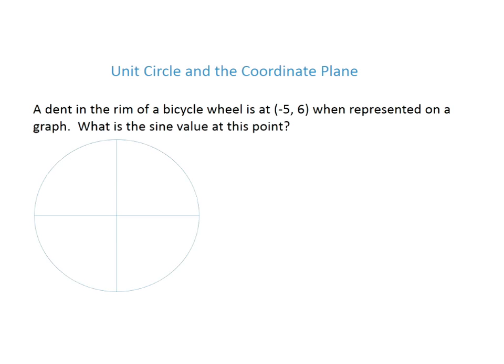In this lesson, we're going to use the unit circle to problem solve on the coordinate plane. So let's take a look at this problem. A dent in the rim of a bicycle wheel is at negative 5, 6 when represented on a graph. What is the sine value at this point?